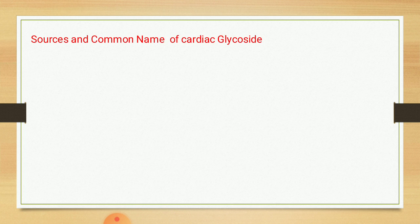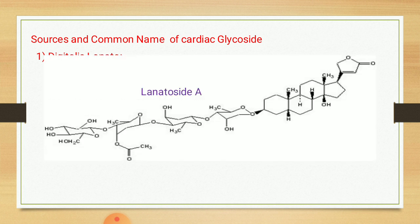Cardiac glycosides mainly occur in the plants digitalis lanata and digitalis purpurea. The first source is digitalis lanata. It consists of three glycosides: lanatoside A, lanatoside B, and lanatoside C.